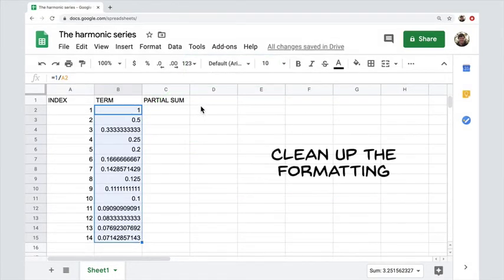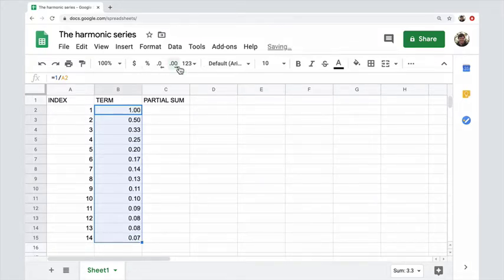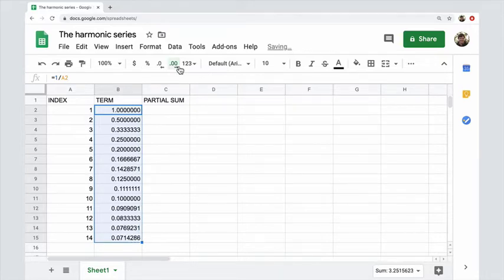Now we can clean up the formatting. This is a simple matter. We've got all our data selected here. We can just go up to this bar and find the decimal places and uniformize that so we can increase some spots and make that look nice.